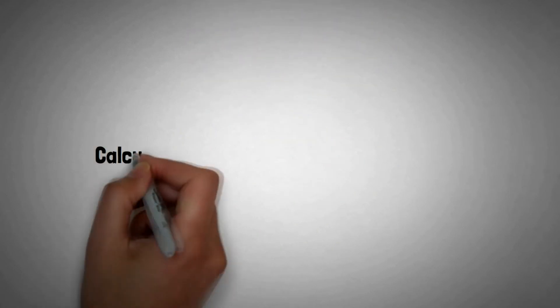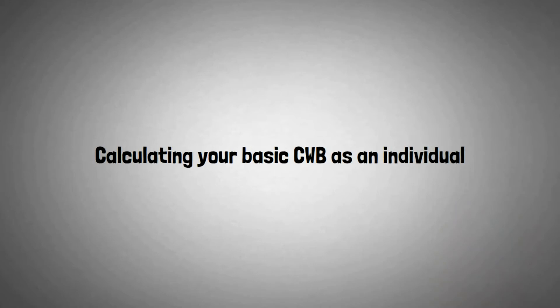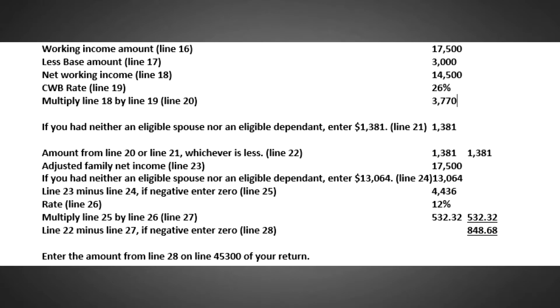Now we'll look at the calculation of basic CWB for an individual without a spouse or an eligible dependent. Suppose the working income amount on line 16 is $17,500. We're going to deduct the base amount of $3,000, giving a net working income of $14,500. The CWB rate is 26%, so when we multiply 26% by $14,500, we get a value of $3,770.